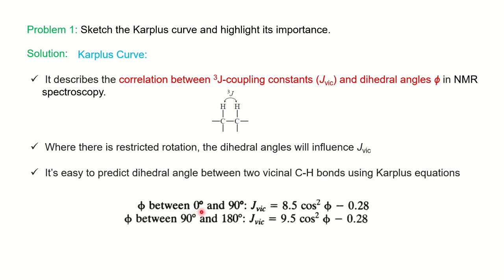There are two Karplus equations. If the dihedral angle φ is between 0° and 90°, use: J(vicinal) = 8.5 cos²φ − 0.28. If the angle is between 90° and 180°, use: J(vicinal) = 9.5 cos²φ − 0.28. The only difference between the two equations is 8.5 versus 9.5. If you know the dihedral angle value, you can calculate the J(vicinal) value using these equations.